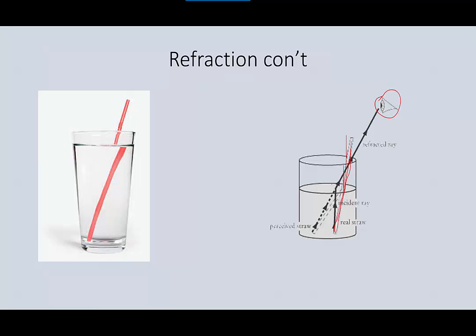Your brain doesn't understand that a bend is occurring at the surface, so it thinks the bottom of the straw is further to the left than it really is. Similarly, when you go fishing and look down into a lake and see a fish, your line will need to go not to where the fish looks like it is but to where the fish actually is. You have to keep in mind that refraction has occurred and figure out where the fish really is based on the difference between the indices of refraction.